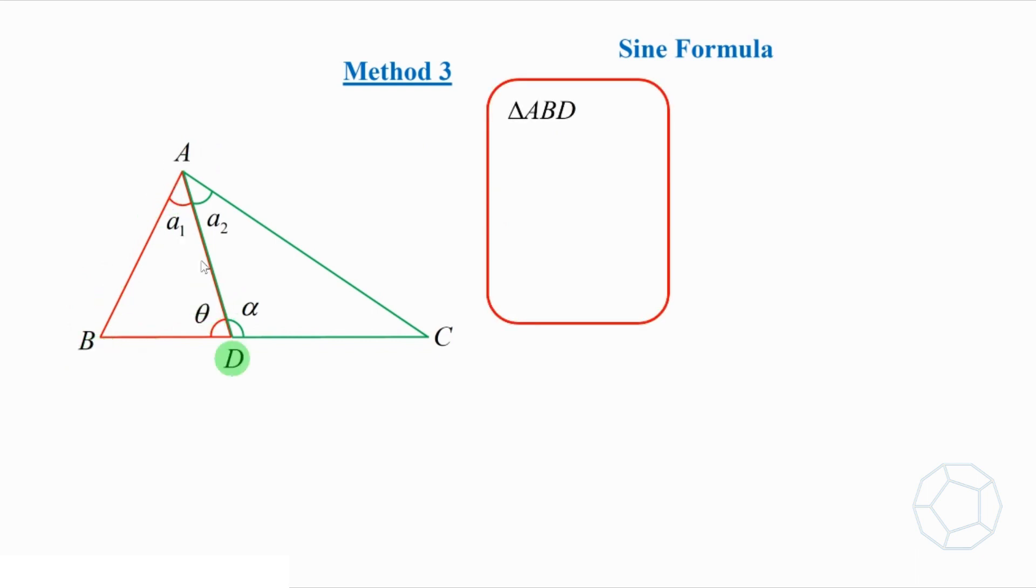In the red triangle ABD, AB over sine theta is equal to DB over sine A1. Putting the sides AB and DB to the left and the sine terms to the right, we get this equation.